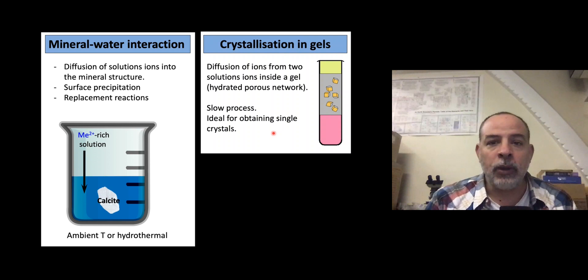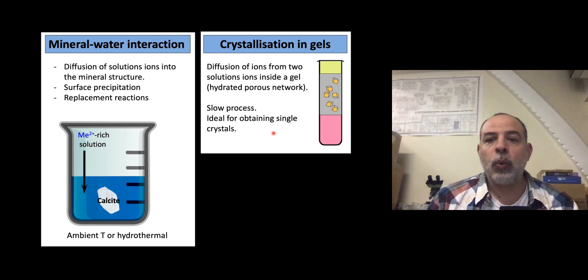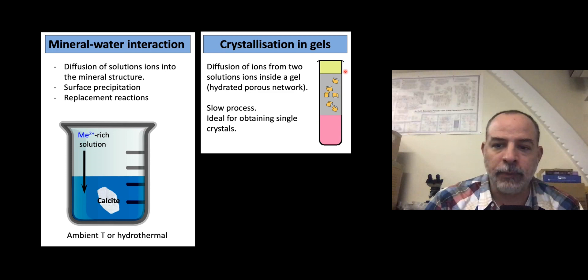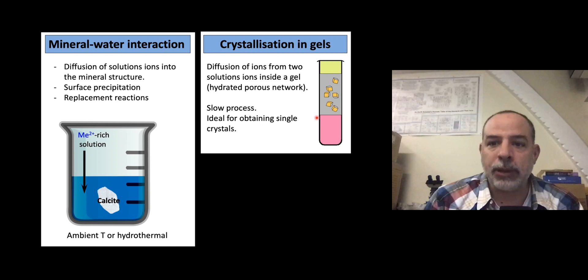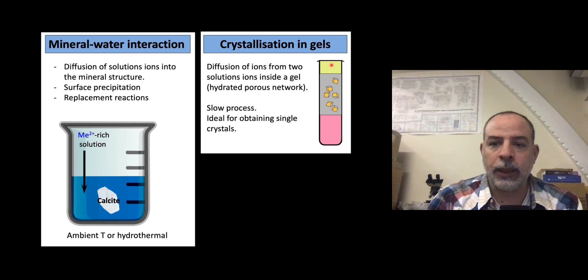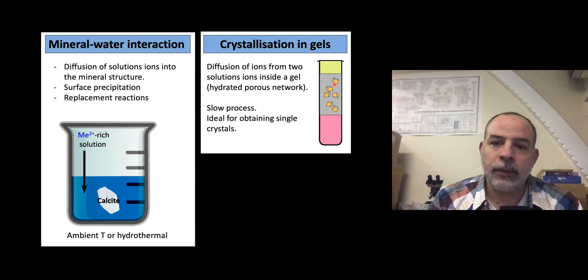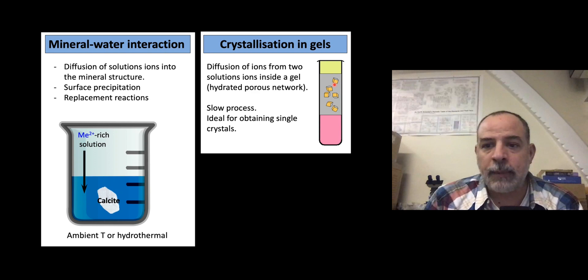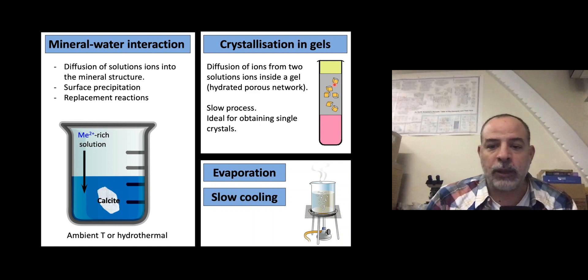Another quite elegant method is crystallization in gels. You have a reactor with a gel in the middle — a hydrated porous network that is nearly 99% water. A solution at the bottom and another at the top allow ions to diffuse through the gel, and when they combine they start nucleating crystals. This is an ideal method to produce single crystals, though the process can be very slow — crystallization can take weeks or even months. There are also classic methods studied at high school, like evaporation or slow cooling.